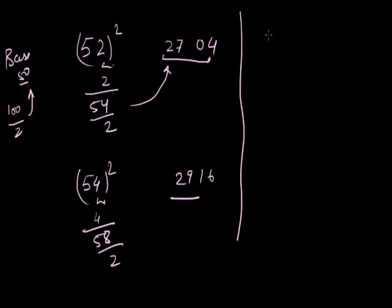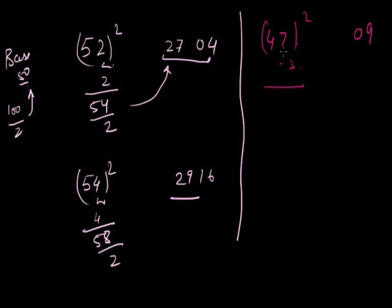Similarly, for a number less than 50, take 47 squared: 47 is 3 less than 50, so 3 squared is 09. Then 47 minus 3 is 44, and 44 divided by 2 is 22. So 47 squared is 2209. I hope that the calculations will now be easier for you.